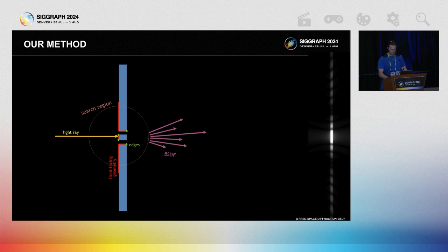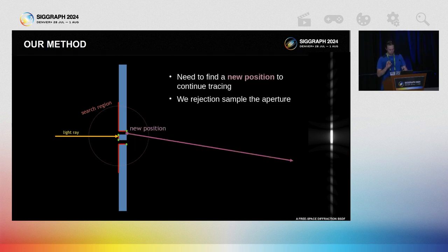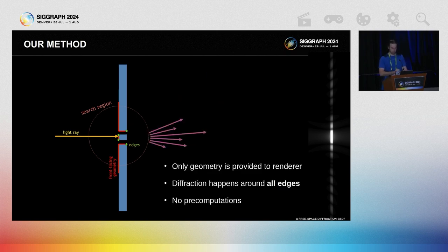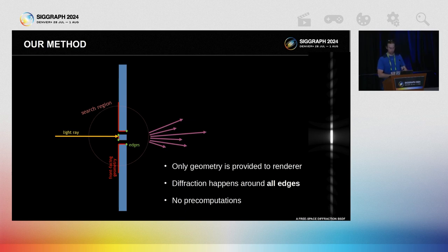Once a BSDF has been constructed, we may continue to path trace almost as normal. One change needs to be made to the path tracer internals: finding a new position from which we continue to path trace. To find such a position, our implementation rejection-samples the geometry until it finds an opening — not the best or fastest method, but it is a simple solution that works. Notice that only geometry has been fed to the renderer — no a priori knowledge is given about any diffracting apertures, just geometry. A free space diffraction BSDF is constructed dynamically on the fly whenever we hit geometry.